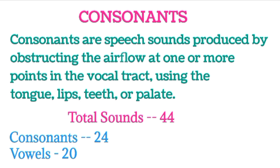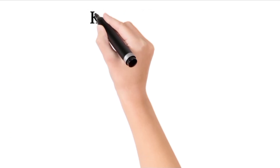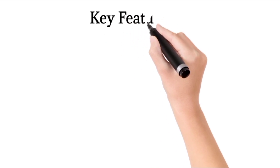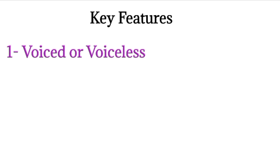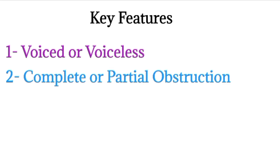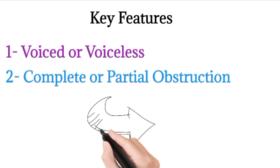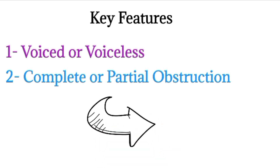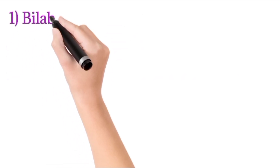Today we will discuss the first 24 consonant sounds and their place of articulation, and in the next video we will see their manner of articulation too. Before we start, let's see the key features of consonant sounds. Consonants can be both voiced and voiceless. They also involve either complete or partial obstruction — the obstruction can be a complete blockage or only a partial one.